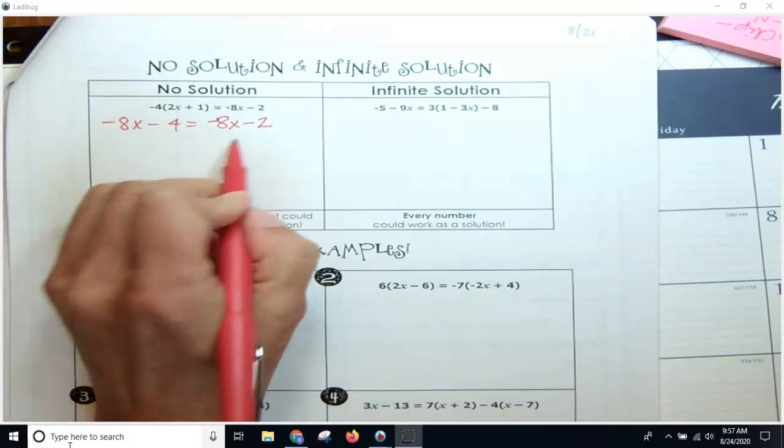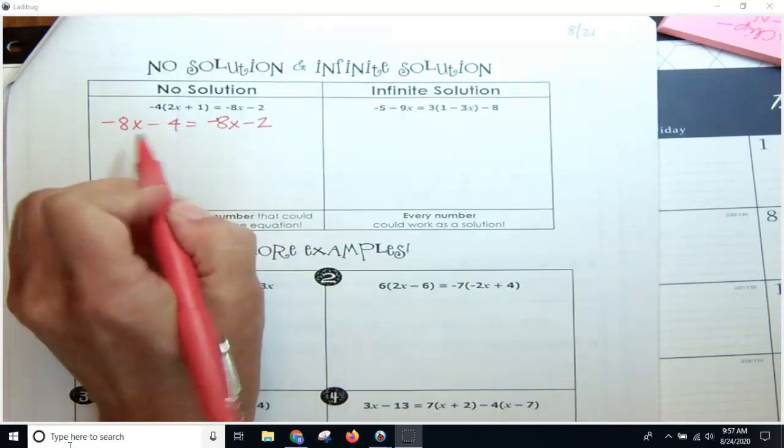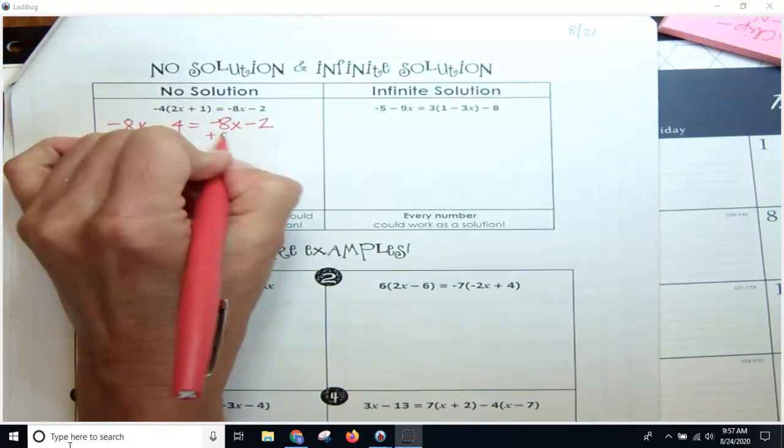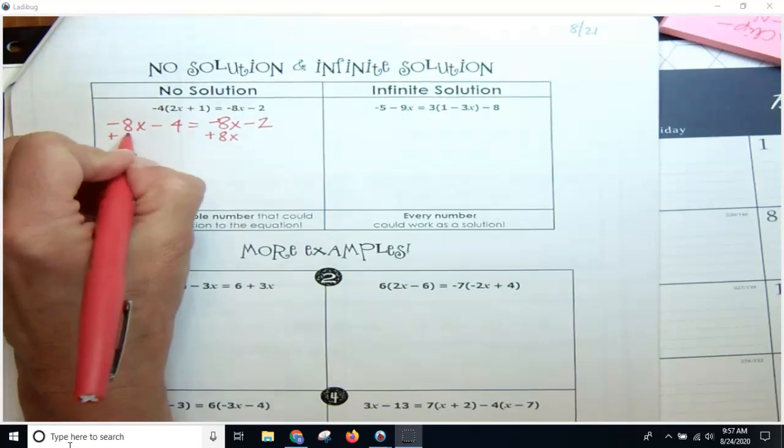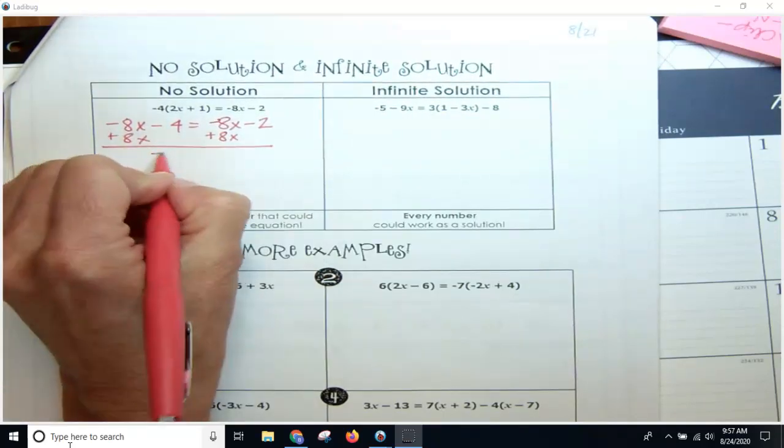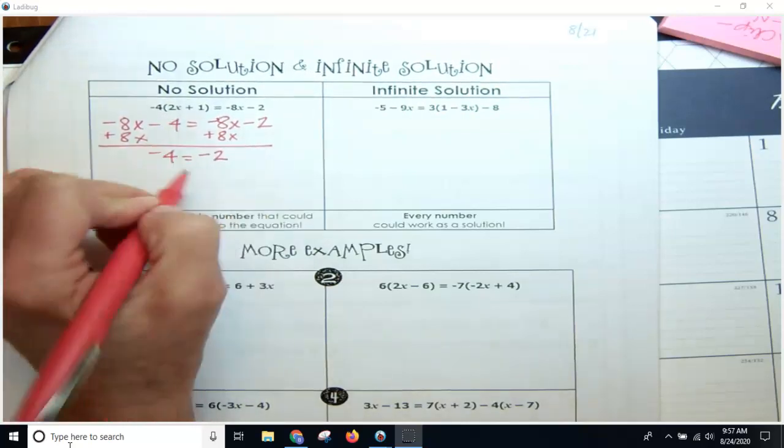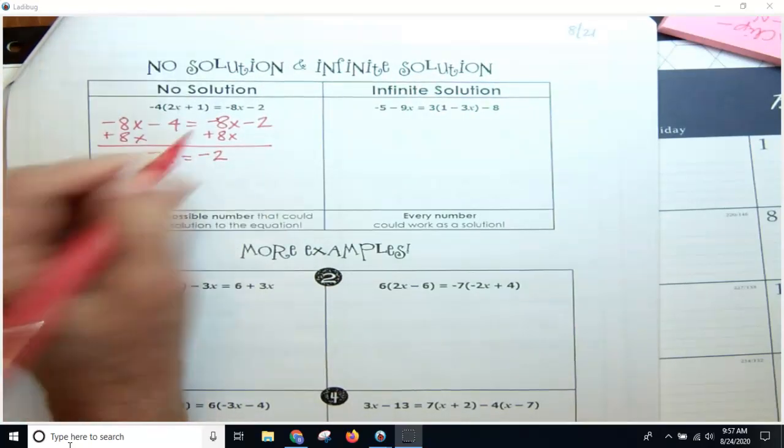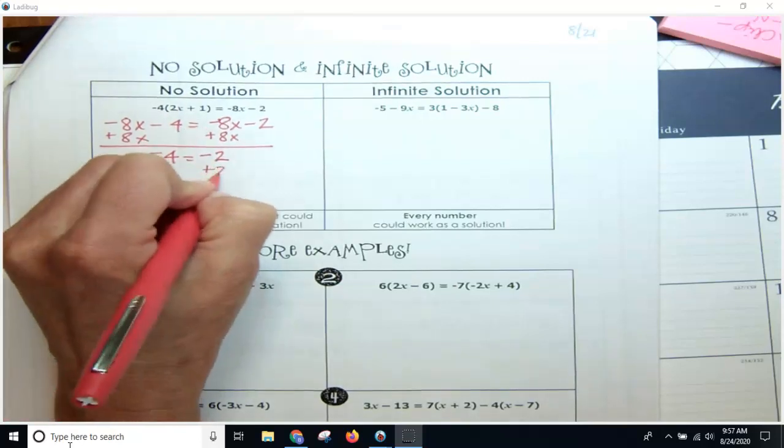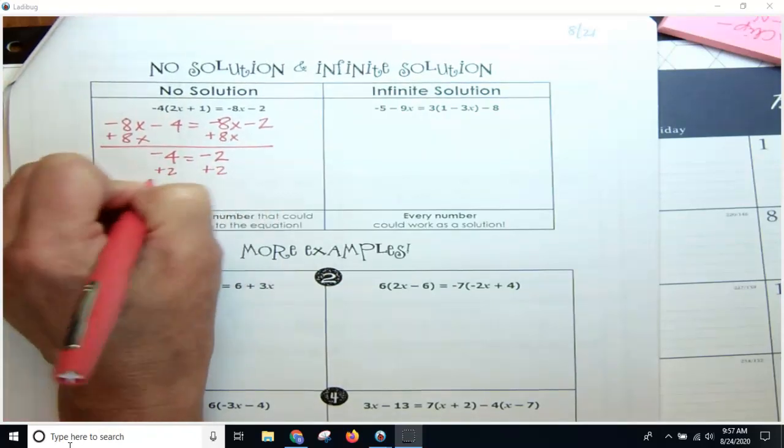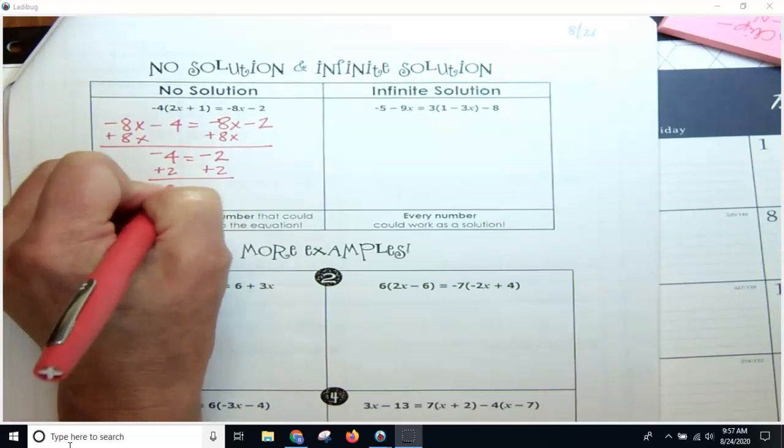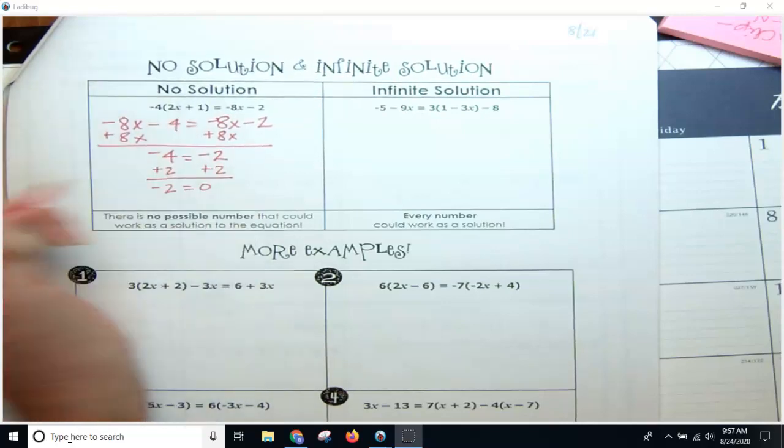Now I'm going to move my variables to one side, so I'm going to add 8x. Add 8x here and I'm going to get negative 4 equals negative 2. So now if I just try and add 2 to both sides, I'm going to get negative 2 equals 0.